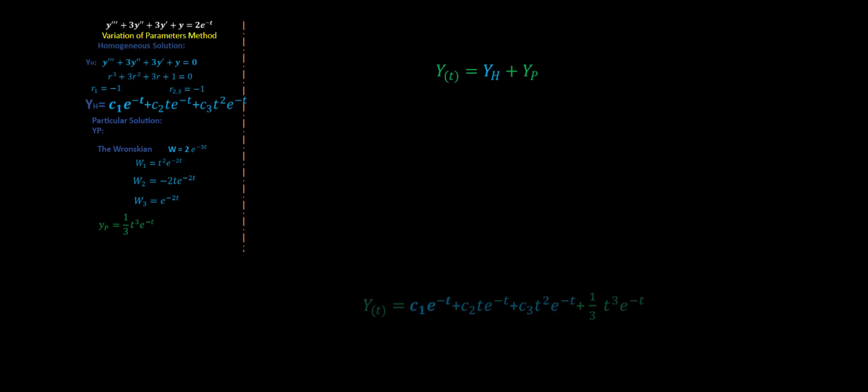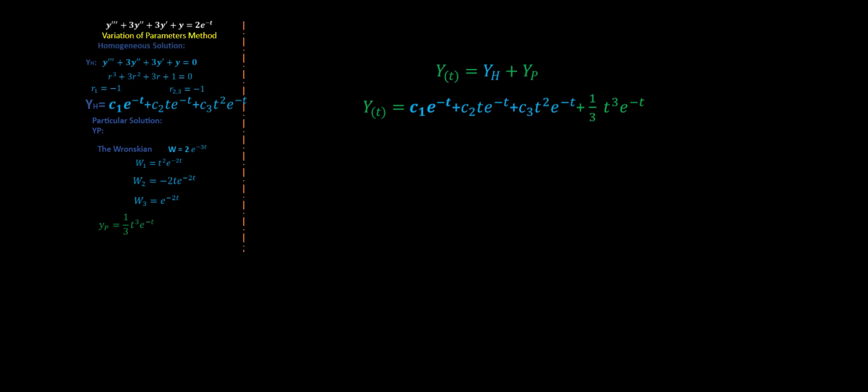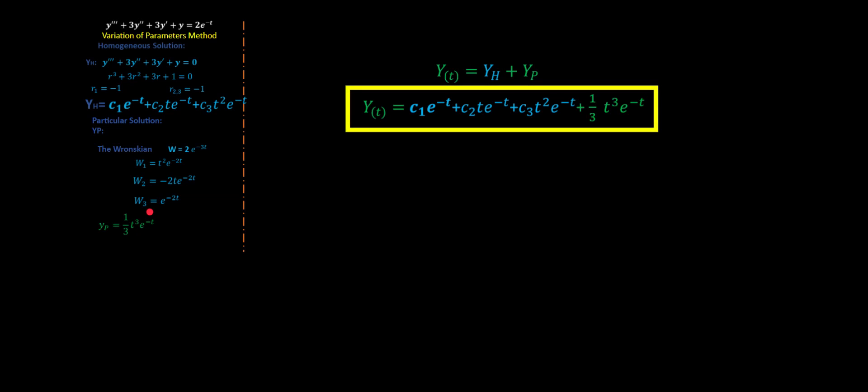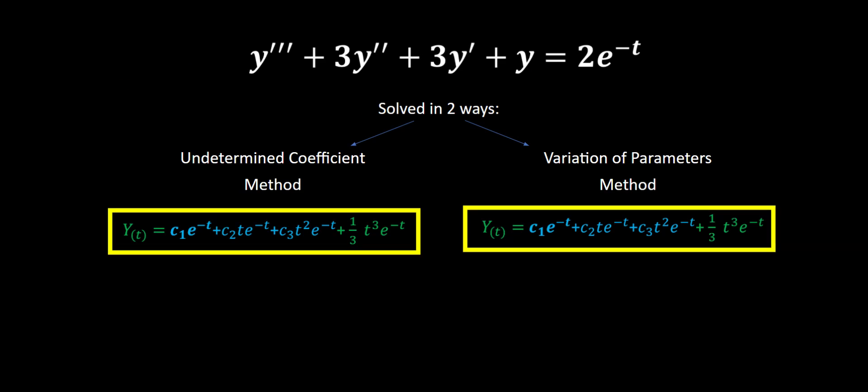We have found our particular solution, so all that is left is to write our final solution: homogeneous plus particular. Plugging in the appropriate values, we find the solution using the variation of parameters method. As a last step, let's compare the two: the undetermined coefficient method and the variation of parameters method give exactly the same result, which gives us confidence that we did a good job. Hopefully you liked the video — please give it a thumbs up so other people can find it as well. Have a great day!